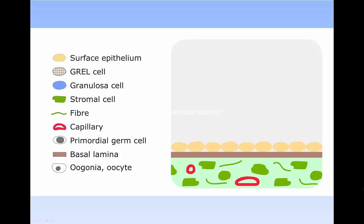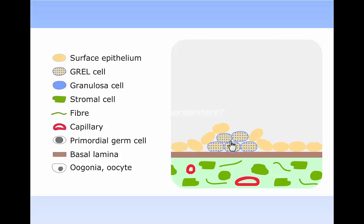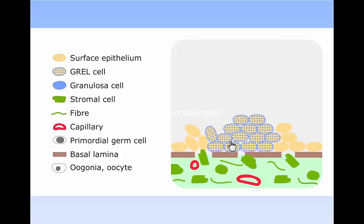Some of the mesonephric surface cells in the location of the future gonadal ridge change their phenotype into what we call gonadal ridge epithelial-like cells or GREL cells. These cells start to proliferate, thus forming the gonadal ridge and the primordial ovary.